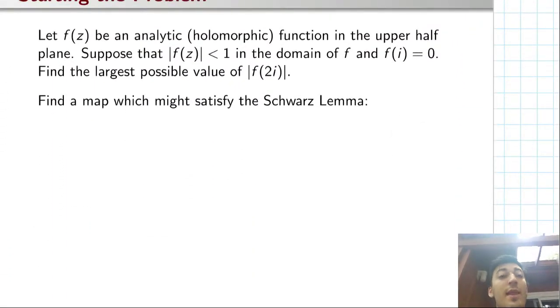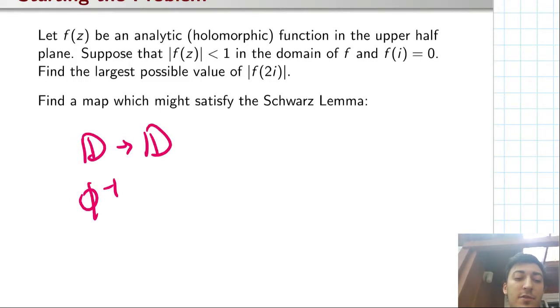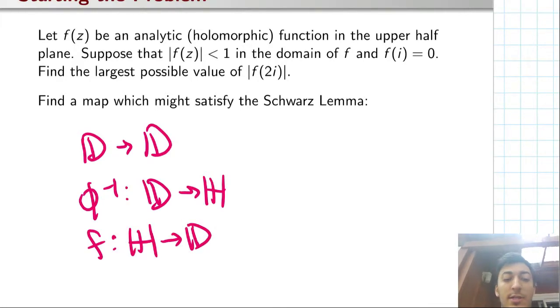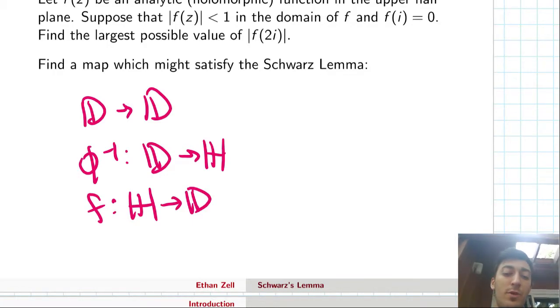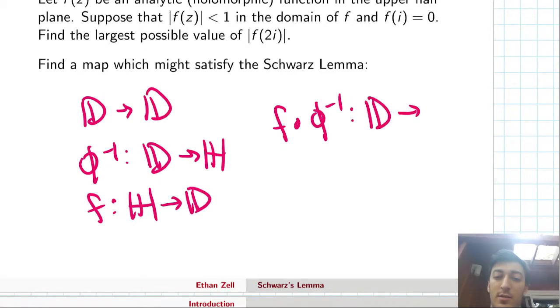So now that we have some idea of what we need to do, we need to find this map. φ^(-1) takes D to the upper half plane, and f takes the upper half plane to the disk. So then the map that we want would just be f ∘ φ^(-1), which takes the disk to itself.